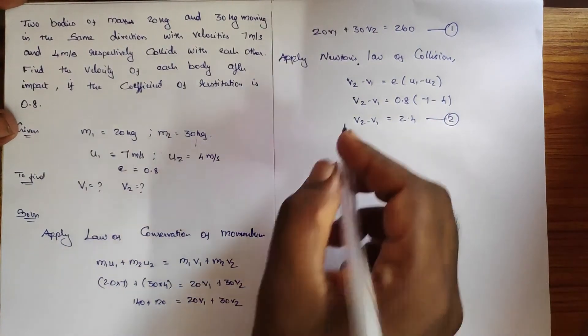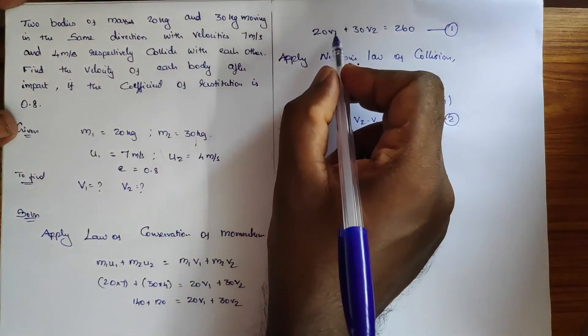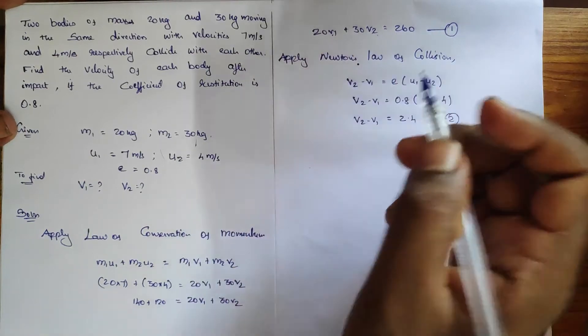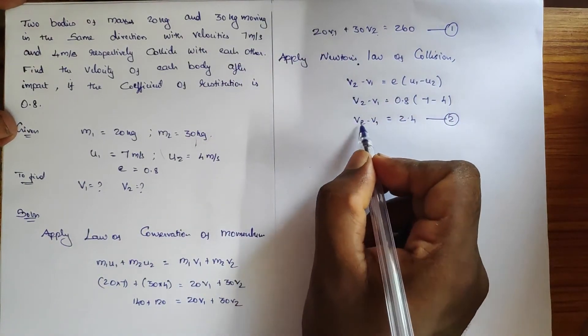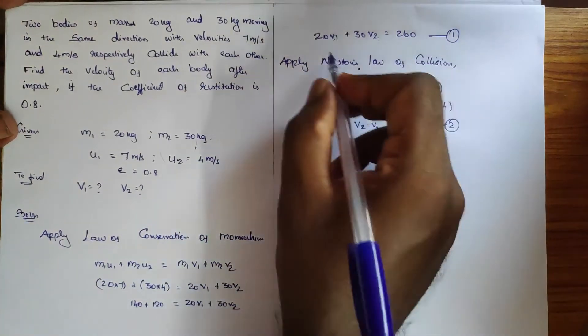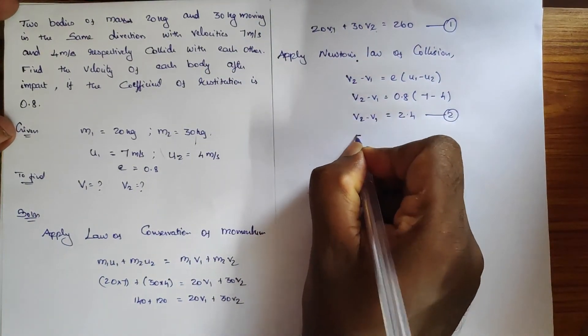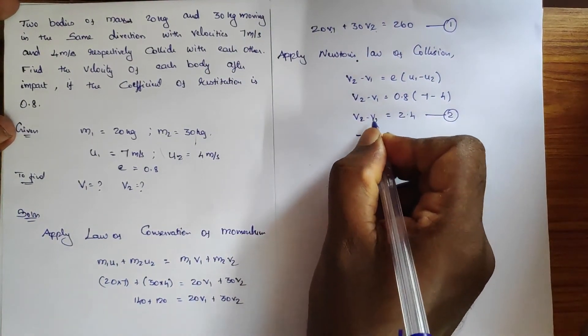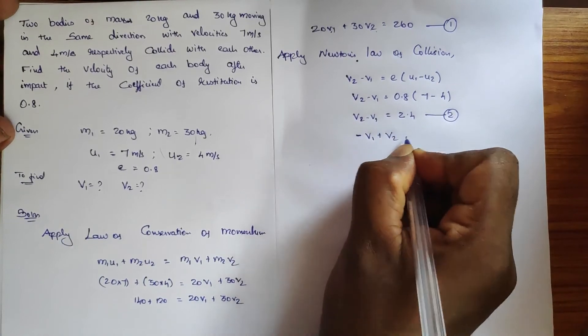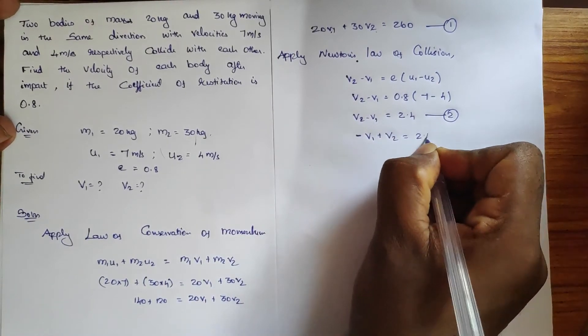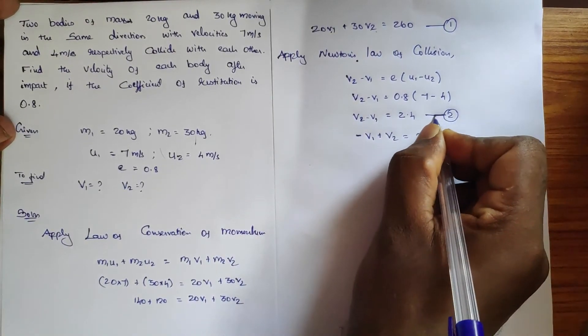So here you get 2.4 equals v2 minus v1. I'm going to consider this as equation number 2. Here v1 and v2 are unknown, similar to equation 1. So I can write minus v1 plus v2 equals 2.4, which is equation number 2.